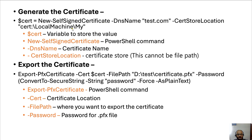In PowerShell when you use New-SelfSignedCertificate, you cannot use a file path directly — for example, you cannot provide a path like D drive or some folder. The certificate is going to be stored in your certificate manager, and from there you can export the certificate and then use it.